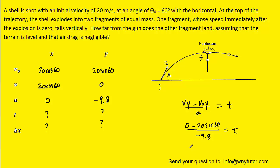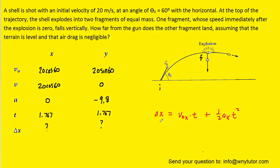When we compute this, the time is roughly 1.767 seconds. That's going to be the time for both the x and the y direction — those times will always be the same in projectile motion questions. Now that we have the time, we can solve for the displacement in both the x and y direction. Starting with the x direction, the acceleration is 0, so that term drops out, and filling in the initial velocity and time we get roughly 17.67 meters for the displacement in the x direction.